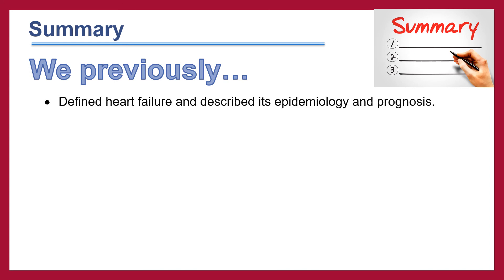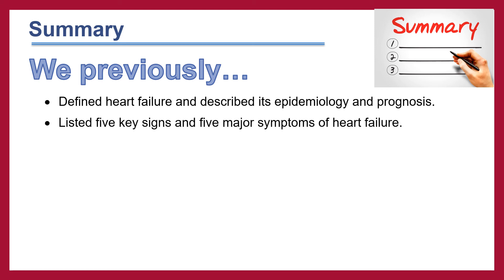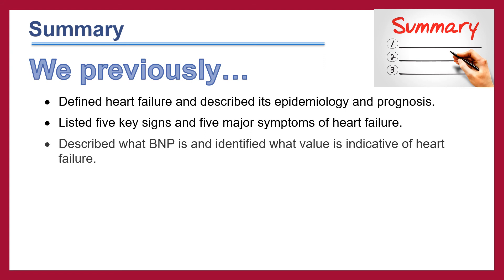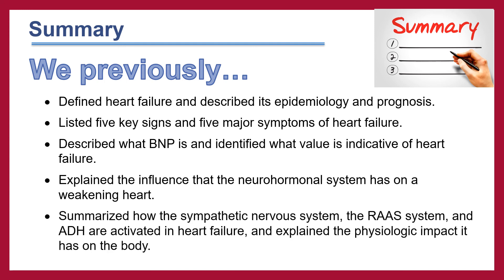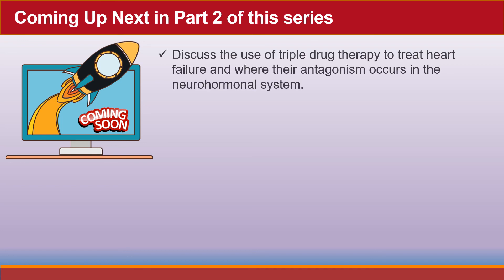To summarize: we defined heart failure and described its epidemiology and prognosis. We listed five key signs and five major symptoms of heart failure. We described what BNP is and identified what value is indicative of heart failure. We explained the influence of the neurohormonal system on a weakening heart, and summarized how the sympathetic nervous system, the RAS system, and ADH are activated in heart failure and the physiologic impact on the body. Next up in part two, we will discuss triple drug therapy to treat heart failure and where their antagonism occurs in the neurohormonal system.